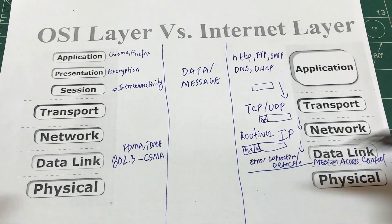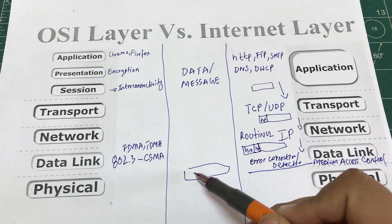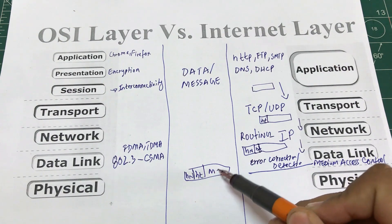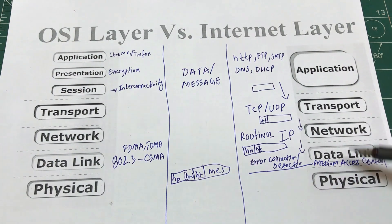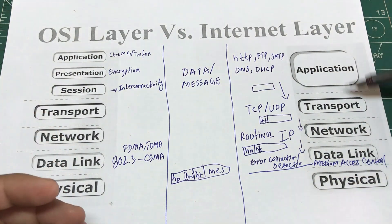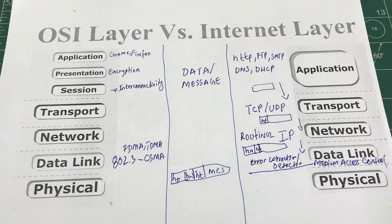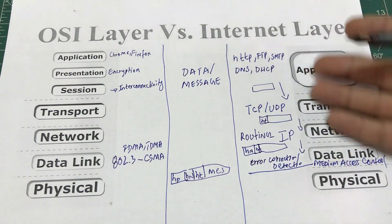So the two jobs of the data link layer are Medium Access Control and error correction. The data link layer also adds its own header HD to the data. Now you have the original message, the transport header HT, the network header HN, and the data link header HD. Everything then gets converted into bits at the physical layer, which handles all cabling, amplification, and modulation.